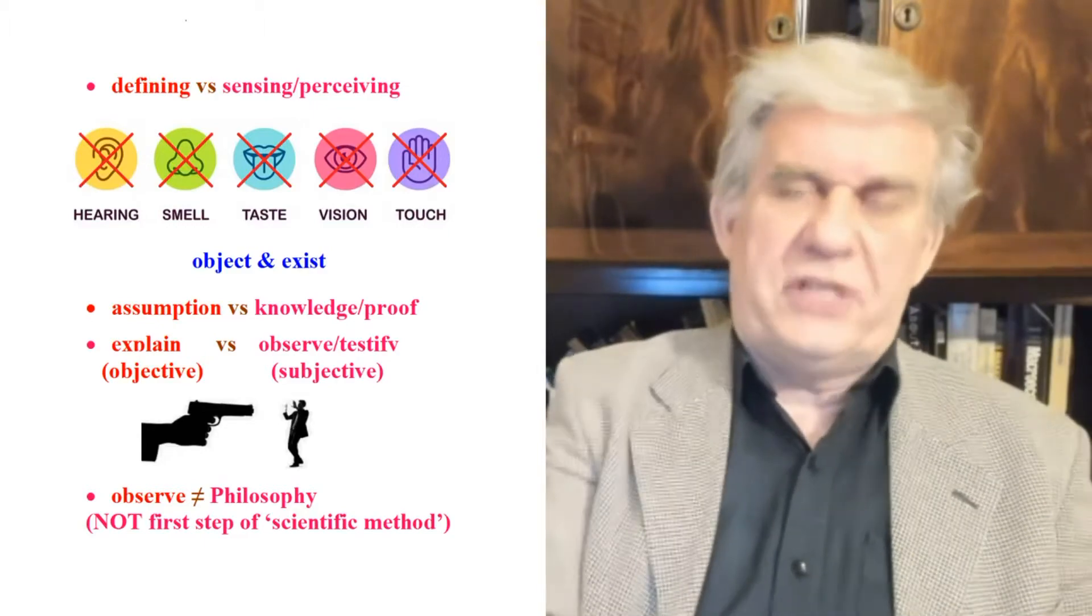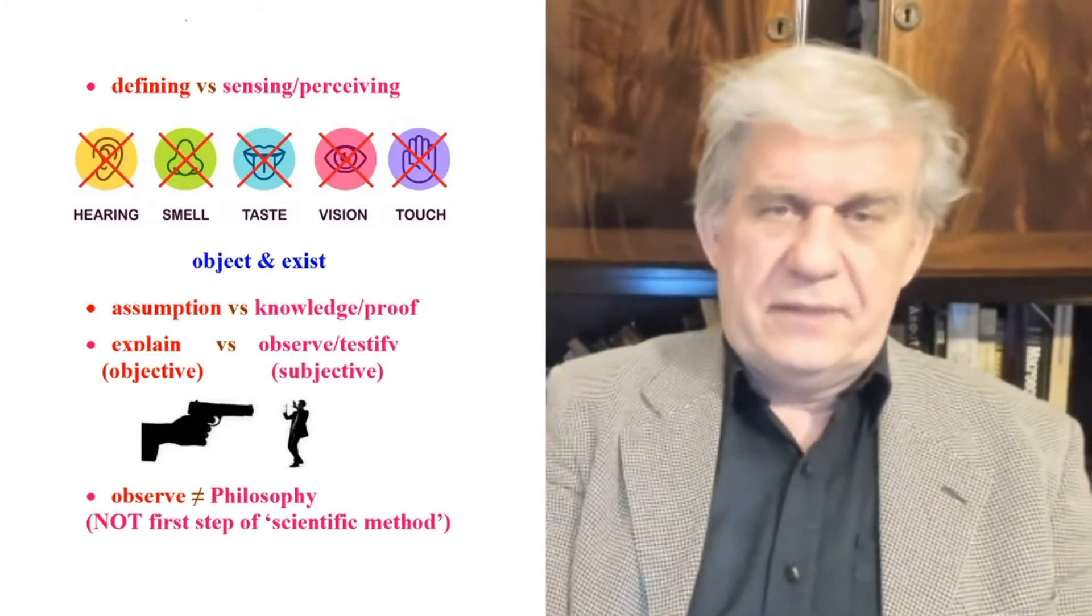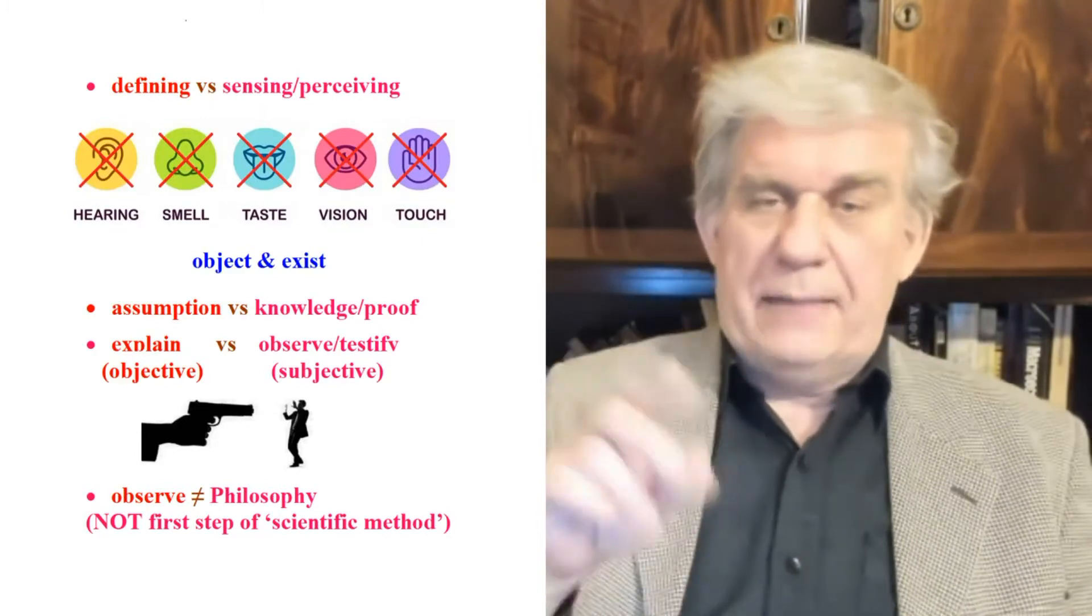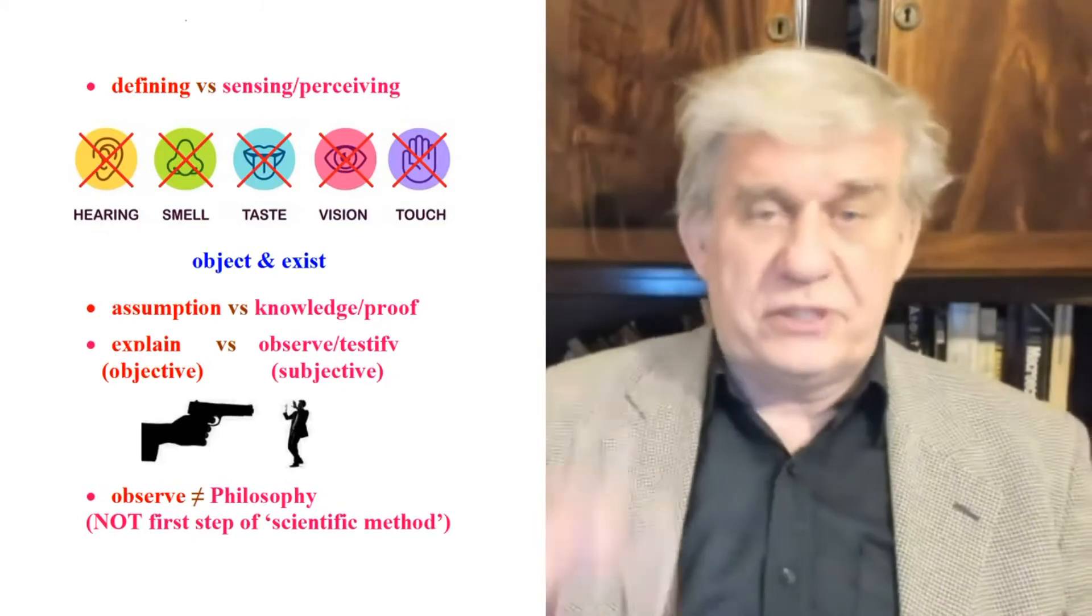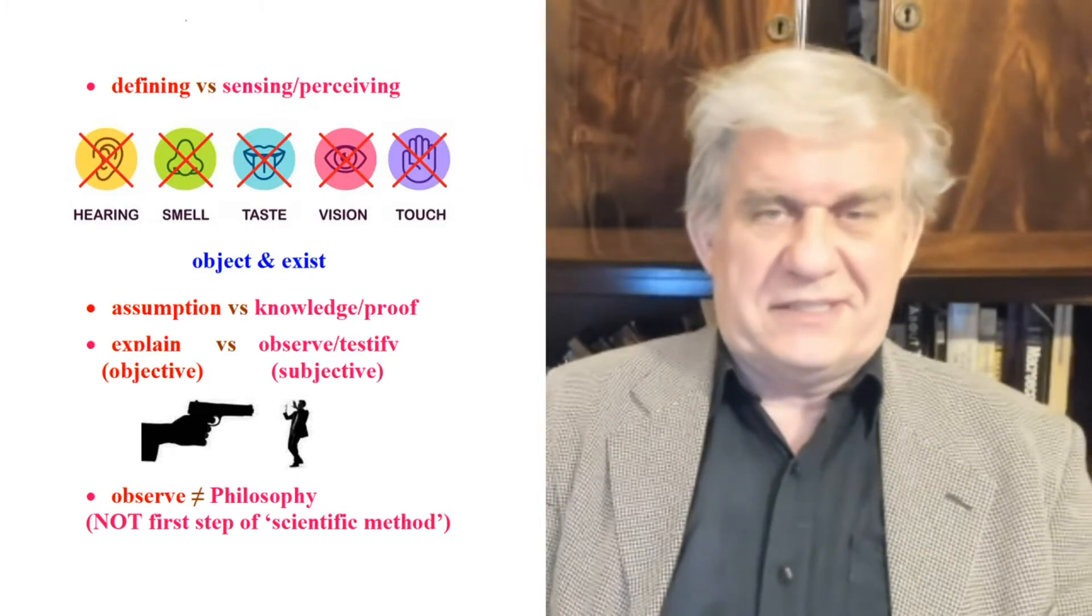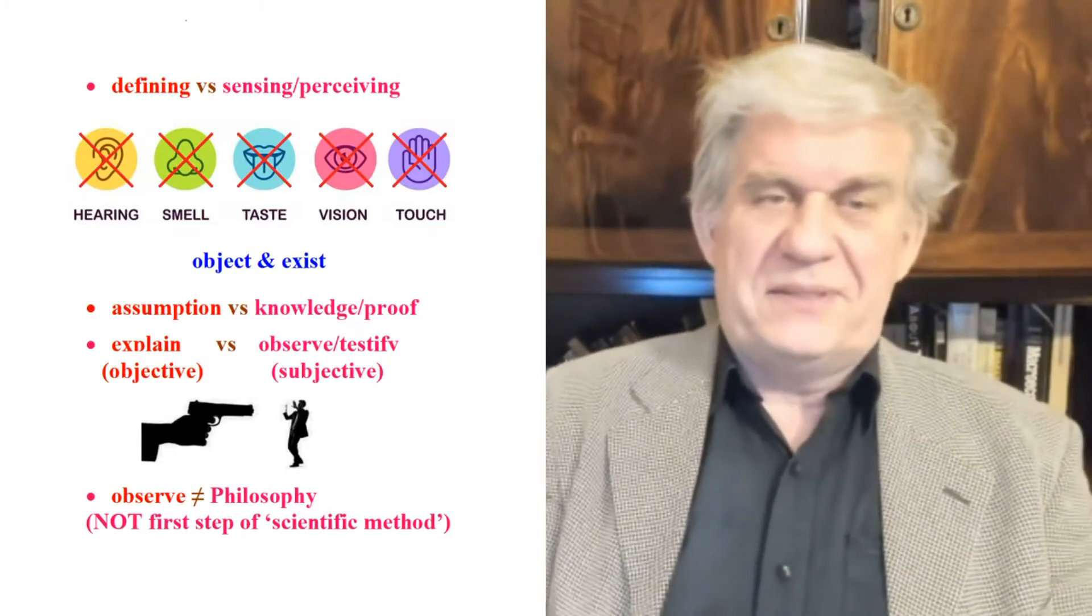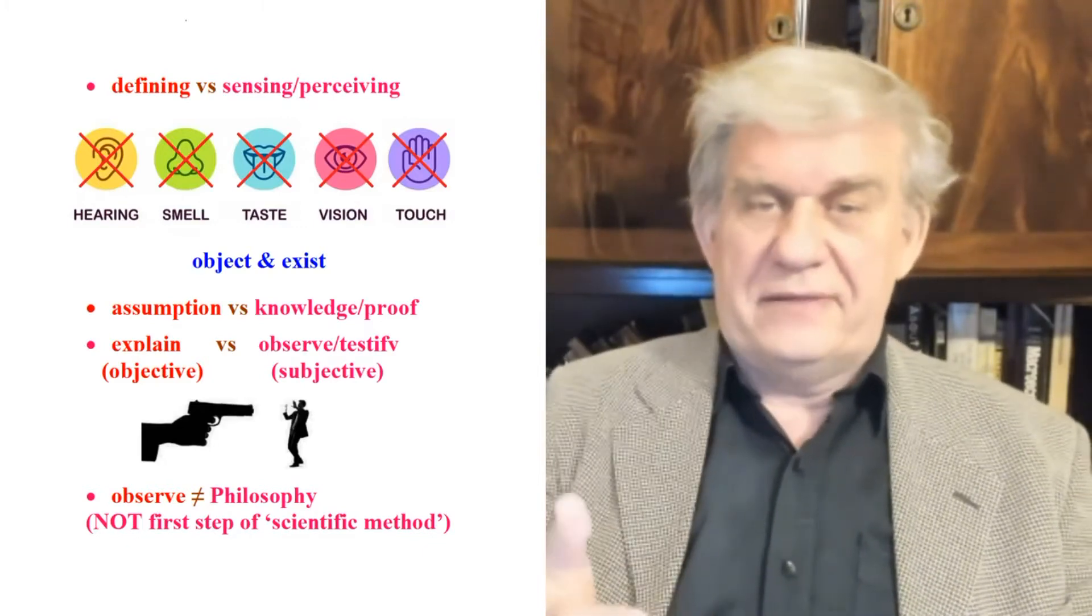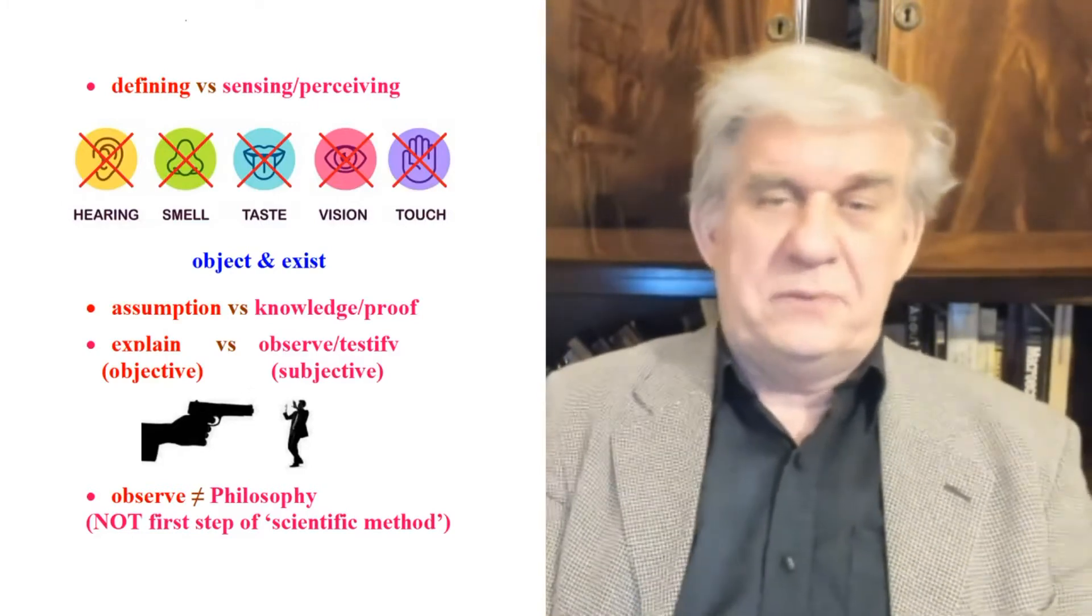What that does is introduce subjectivity, specifically in the two important words of physics that form the foundations of physics: object and exist. People think, have this notion that an object is that which you can touch or see, and they also believe that existence is also that which you can touch or see. So they have, throughout the centuries, equated object or a thing with existence. They think they're synonyms. They can't see any difference between these two words.